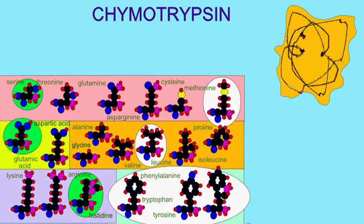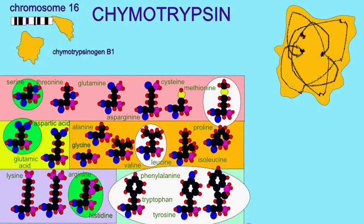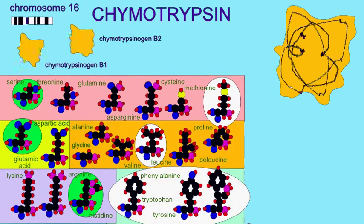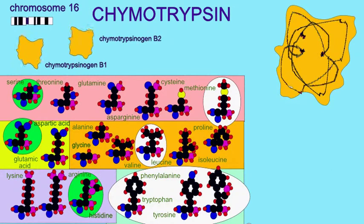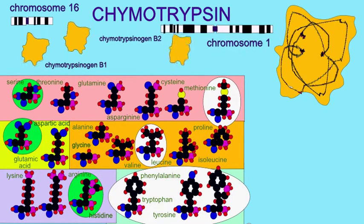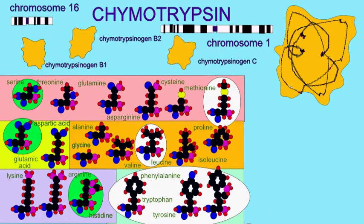The pancreas produces three chymotrypsin genes, two of which — chymotrypsin B1 and B2 — are coded by chromosome 16, and chymotrypsin C, coded by chromosome 1.